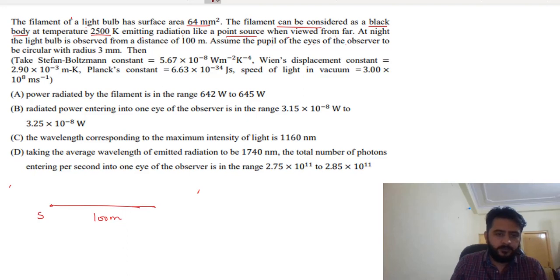Let's suppose first we need to understand how power radiated by the filament is. Power is equal to εAσT⁴, and this is given by Stefan's law. So you know ε is for a black body, and area is 64 millimeter square into 64×10⁻⁶. Sigma is Stefan's constant, 5.67×10⁻⁸.